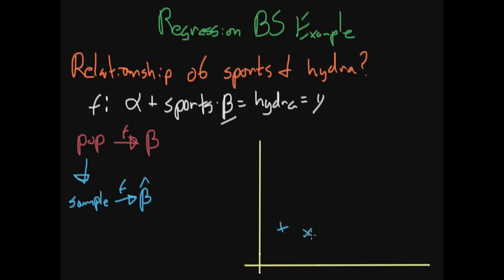For example, you could have the number of hours they play sports on the x-axis versus the amount of hydration on the y-axis. You would draw a line of best fit through all these data points. The slope of this line gives you beta hat. This is the idea behind regression.